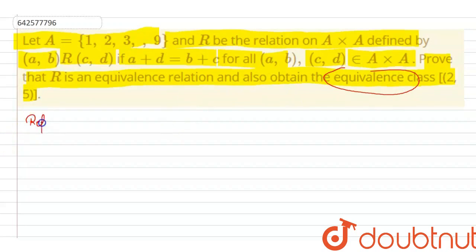For reflexivity, the pairs (a,b) and (b,a) should belong to R. We prove that a+b equals b+a, and these are equal. So we can say this relation is reflexive.